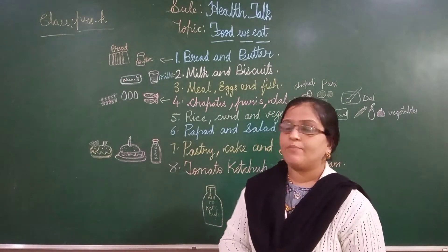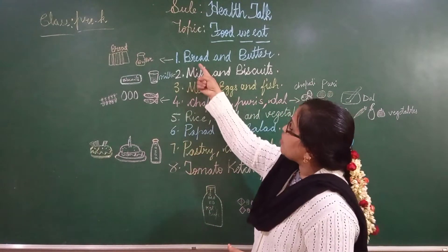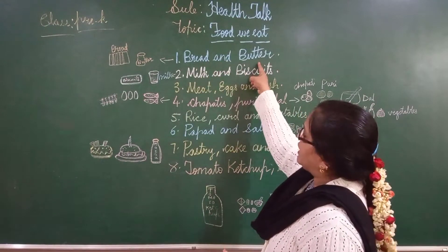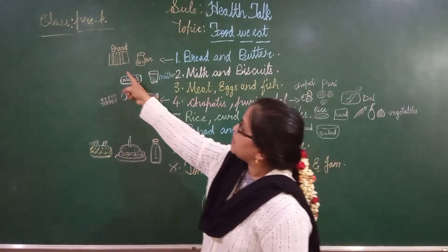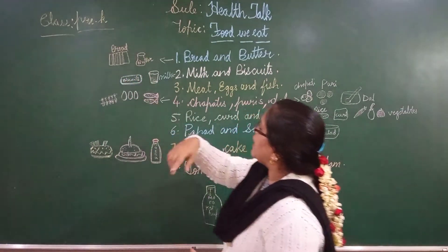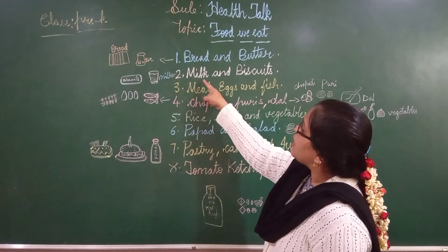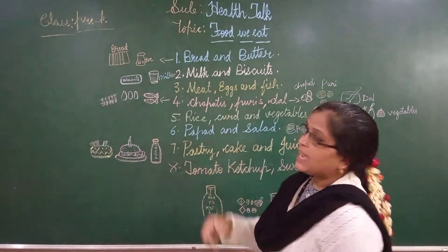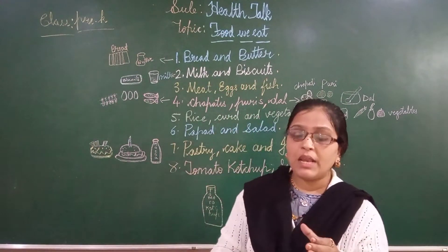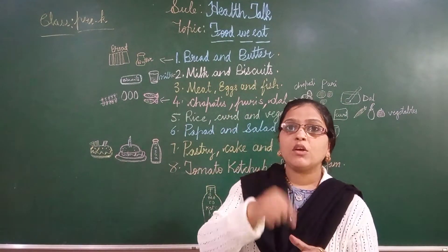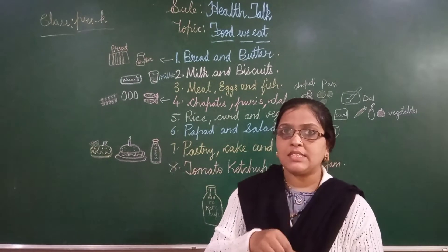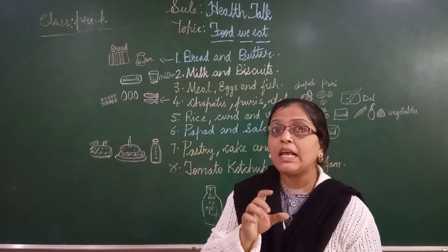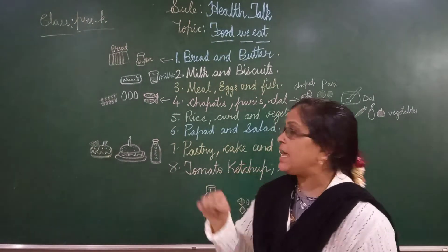Repeat it after me. Bread and butter. Milk and biscuit — a glass of milk with a good biscuit. You can dip and have milk and biscuit.